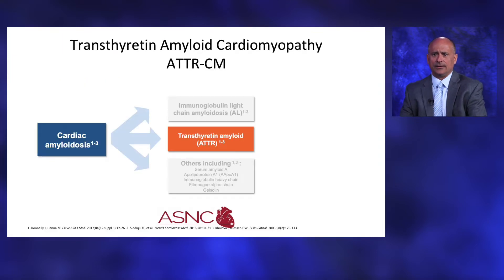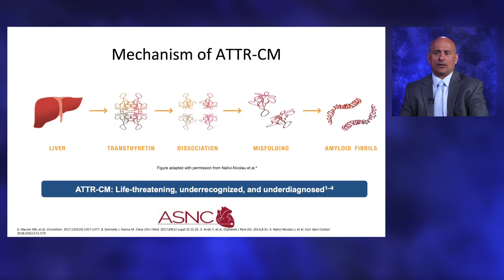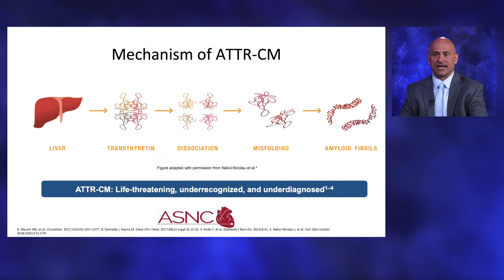Switching to ATTR cardiac amyloidosis: transthyretin is produced in the liver. These generally disassociate, misfold, and develop amyloid fibrils which deposit in various tissues throughout the body. ATTR cardiomyopathy is a life-threatening, under-recognized, and under-diagnosed disease. However, the prognosis is not as grave as AL amyloidosis. There are two types of ATTR amyloidosis: wild type and hereditary type.